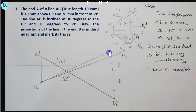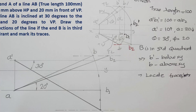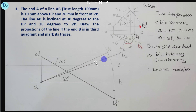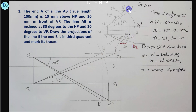We follow the same procedure for B2-dash. A-dash B-dash: B-dash is going to be at the B2 locus and A-dash is the A-dash locus. The length R gives B-dash, so B-dash is located. We then find the B-dash locus on the front view.